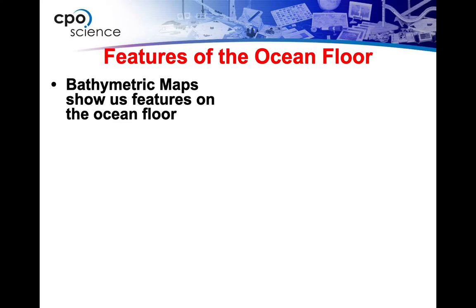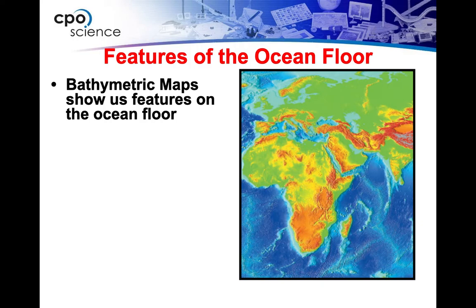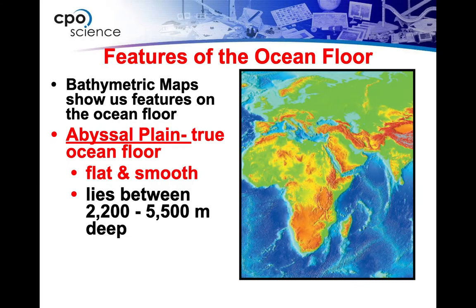We use special maps called bathymetric maps to study the ocean floor. Instead of just showing blue water, they show features and colors indicating what's on the ocean floor. Most of the ocean floor is the abyssal plain — the true ocean floor. It's quite flat and smooth, covered with an ooze-like material rather than sand. When organisms die and sink, if not consumed, they form this ooze over time. In older areas it's thicker; it lies anywhere between 2,200 and 5,500 meters deep.